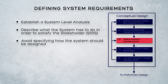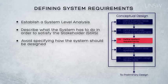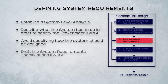We're aiming to describe what the system has to be able to do in order to satisfy the stakeholder requirements in the STRS. We try to avoid specifying how the system should be designed at this stage. If we start specifying the design at this stage, we risk overlooking innovative ways of solving the problem. We also risk taking responsibility for a design that simply doesn't work. We should specify what we want the system to do and leave the design to the experts we engage to perform the preliminary and detailed design later in the process. We'll record the system level requirements in an artefact that we're going to call the System Requirements Specification, or the SYRS.